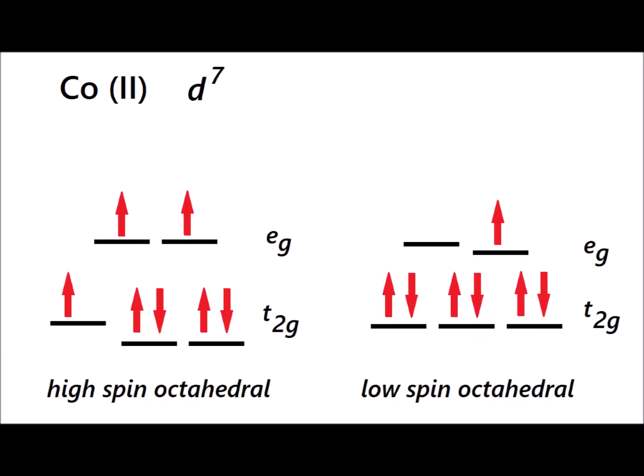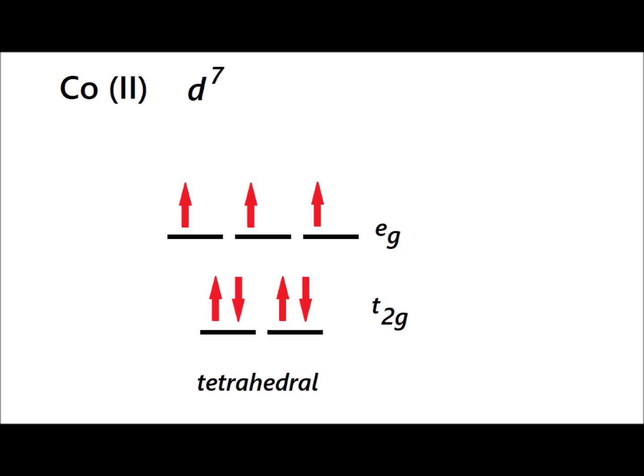The third metal we tried was cobalt two plus. Cobalt two plus is widely used in models of novel metalloporphyrin systems like hemoglobin and myoglobin. So it can be either high-spin or low-spin octahedral because we have a d7 metal. So that's one complication. It can also be tetrahedral. So we have d7 tetrahedral.